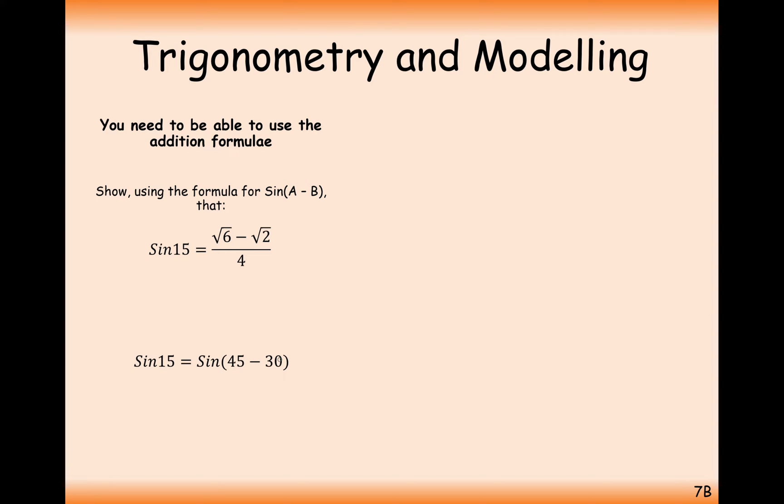We're going to do 45 minus 30 that will give us 15 and we know the exact values for 45 cosine and sine and we know the exact values for 30 cosine and sine as well. So what we're going to do is use the rule from the formula booklet to expand sine 45 minus 30.